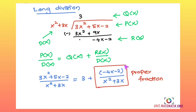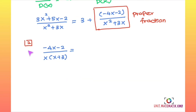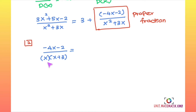From here we can proceed to do a partial fraction for the proper fraction. The denominator is x(x + 3) — already factorized. The first factor is linear and the second factor is also linear, so both are linear factors. Since we have linear factors, the numerators should be constants: A over x plus B over (x + 3).